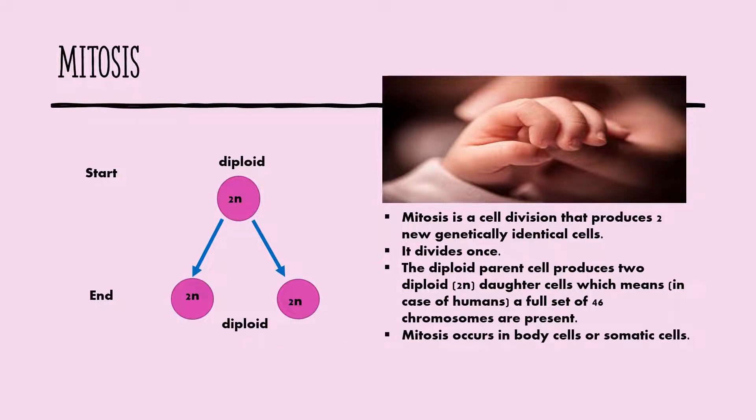Mitosis occurs in body cells or somatic cells. All of the body's non-reproductive cells divide by mitosis, such as skin cells of the hands, muscle cells, and blood cells, except red blood cells because they do not have a nucleus.